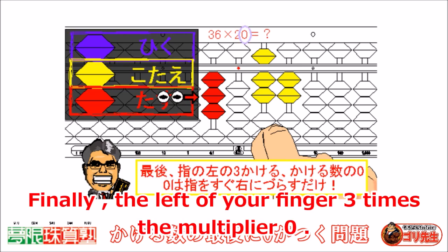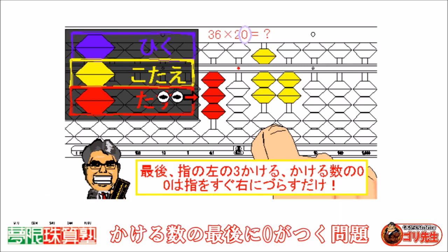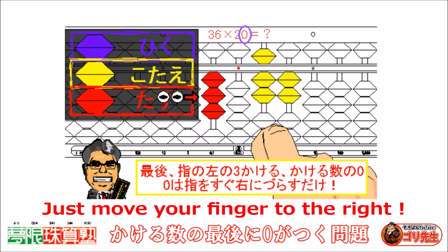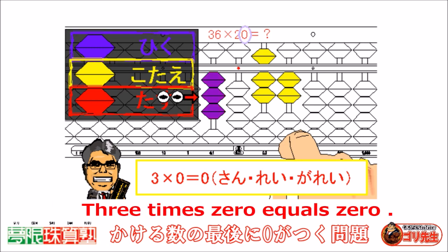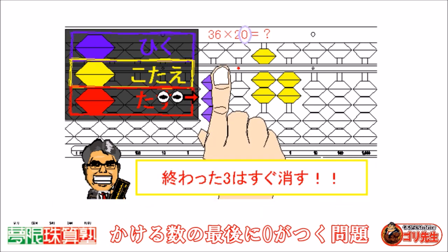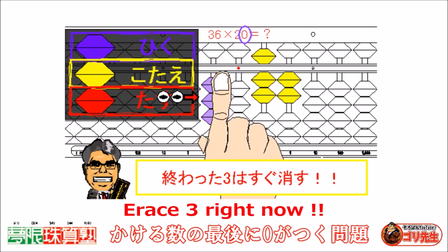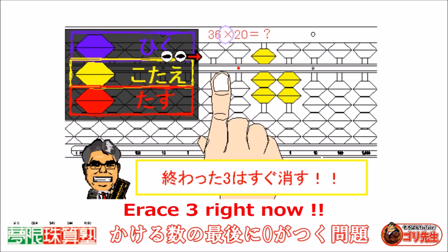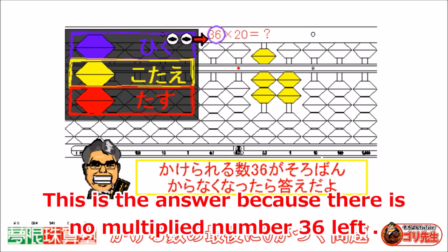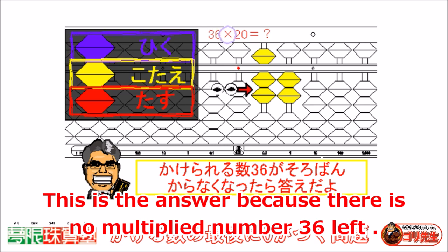Finally, the left of your finger — three times the multiplier, zero. Just move your finger to the right. Three times zero equals zero. Erase three right now. This is the answer because there is no multiplied number thirty-six left.